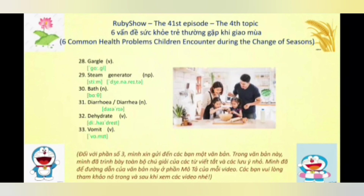Từ số 30, chúng ta có danh từ là 'bath.' Có 5 nghĩa: nghĩa số 1 là sự tắm rửa; nghĩa số 2 là chậu tắm hoặc bồn tắm; nghĩa số 3 là nước tắm (tức là nước được cho vào bồn tắm sẵn sàng để dùng để tắm); nghĩa số 4 là vật chứa chất lỏng được dùng để nhúng một vật nào đó theo cách xử lý hóa học hay công nghiệp; và nghĩa số 5 là bể bơi trong nhà hoặc nhà tắm.